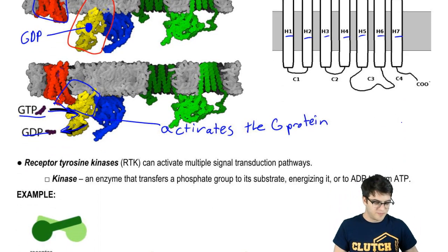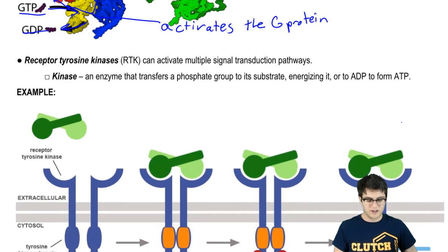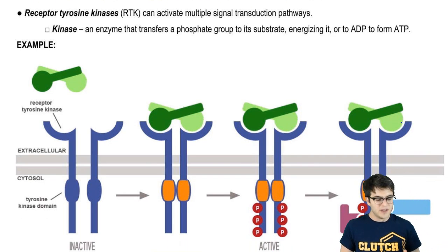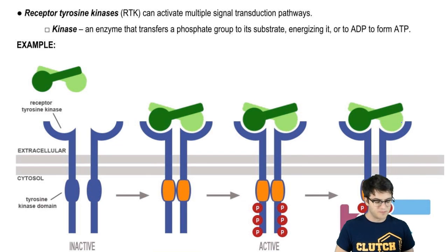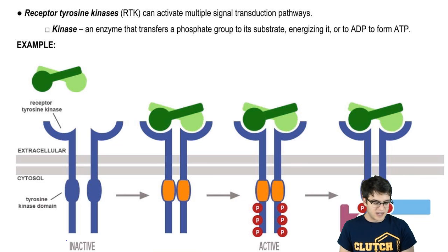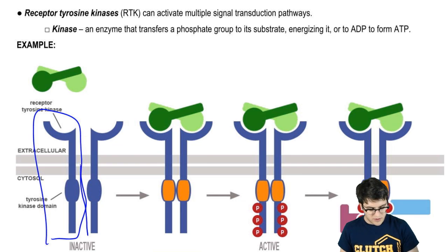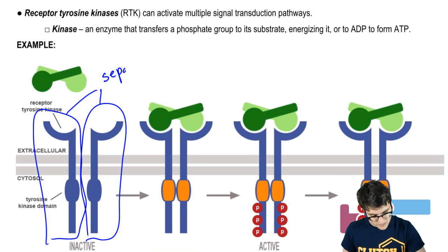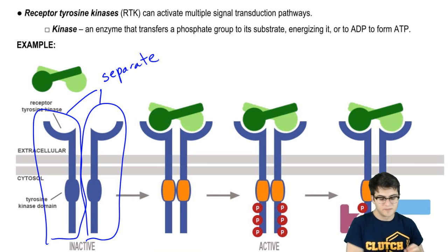Another type of receptor is called receptor tyrosine kinase, or RTK. Receptor tyrosine kinases are special because they can activate multiple pathways at once. How these work is a little more complicated — receptor tyrosine kinases are actually separate. These two components of the receptor are separate.